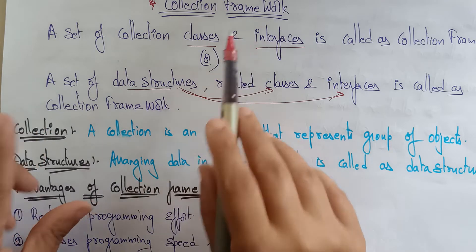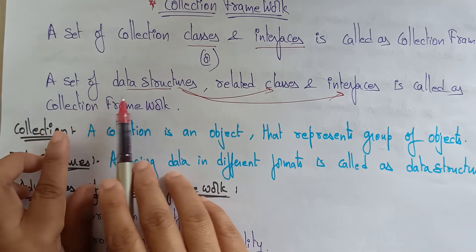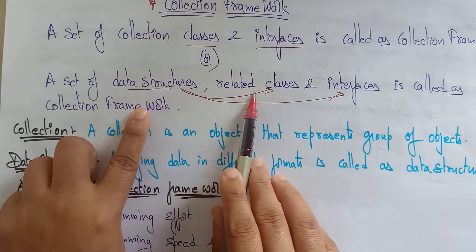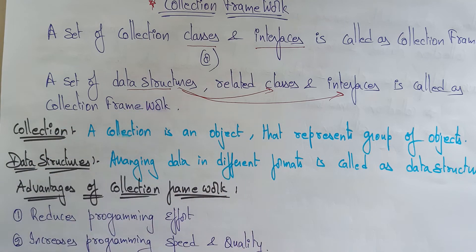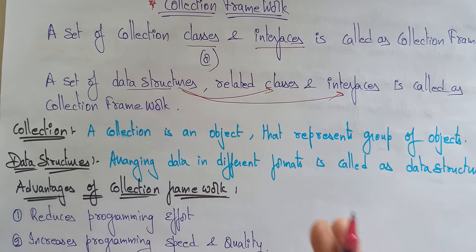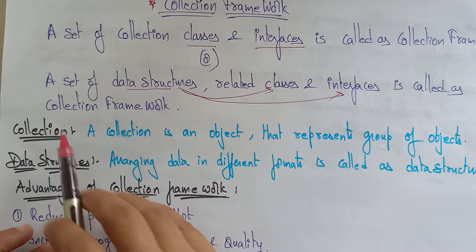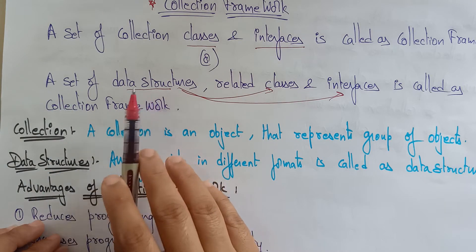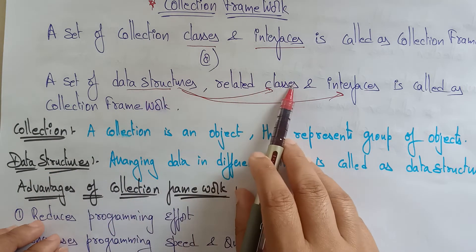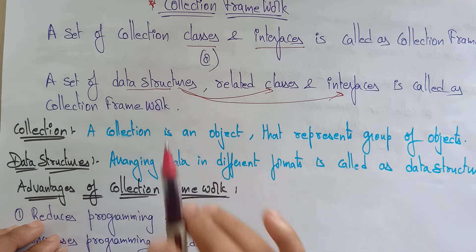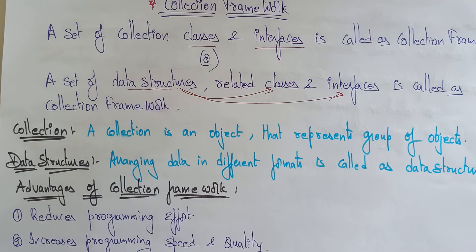A collection framework is a set of data structures related to whatever data structures we are using. What are the data structures? Arrays, linked list, queues, stacks — these are all data structures. So a set of data structures like arrays and linked lists that are related to classes and interfaces is what we call a collection framework.